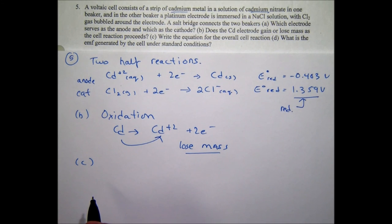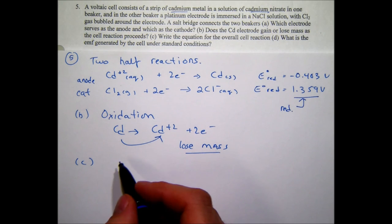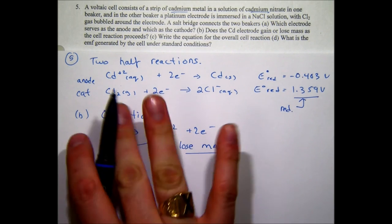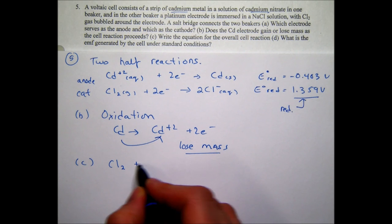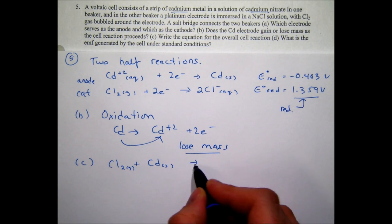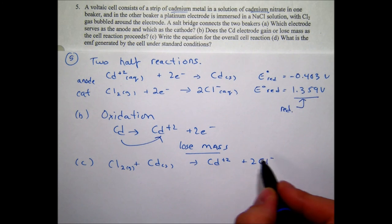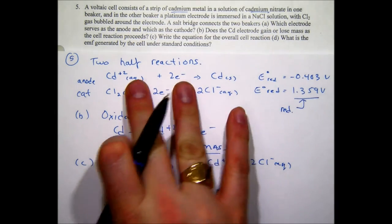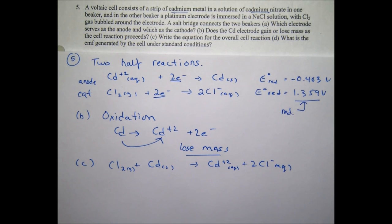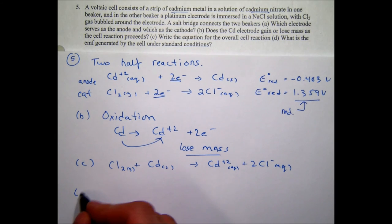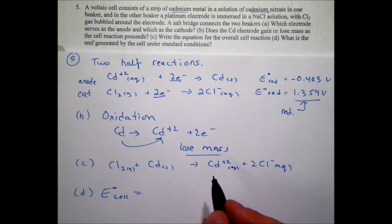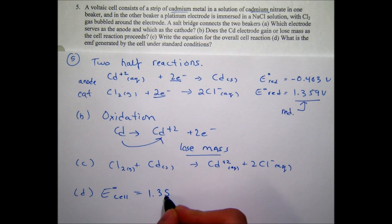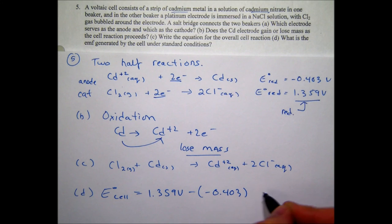For part (c), the overall cell reaction: we flip the cadmium half reaction and add them together, making sure electrons cancel. The overall reaction is: Cl₂(g) + Cd(s) → Cd²⁺(aq) + 2Cl⁻(aq). For part (d), E°cell = E°cathode − E°anode = 1.359 − (−0.403) = 1.762 V.